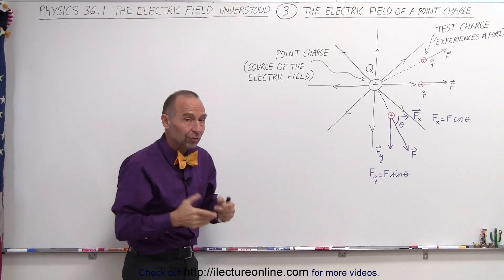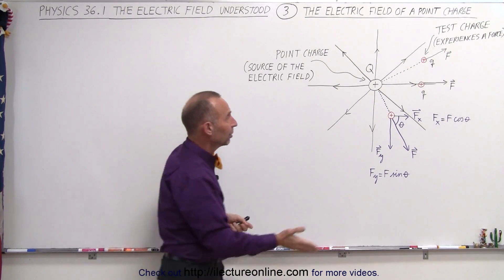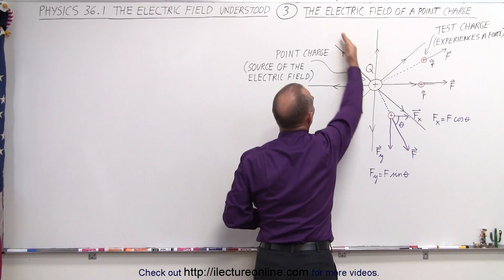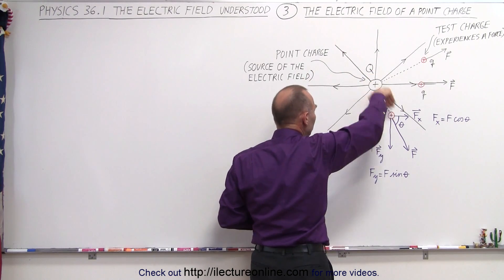The direction of the arrows indicate the direction of the electric field, which means around the point charge, the electric field emanates directly away from the charge.